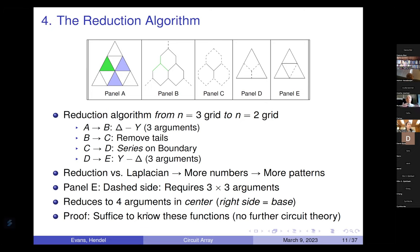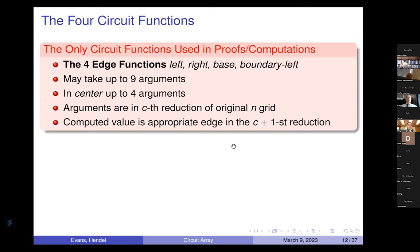It suffices to know how to get the resistance of each edge type in the two-grid from the three-grid. There are four such functions, and each takes up to nine variables — in the center, up to four variables. The arguments are in the C-th reduction of the original N-grid, and the computed value is an appropriate edge in the C-plus-first reduction, meaning we're going from a three-grid to a two-grid or a ten-grid to a nine-grid.